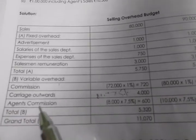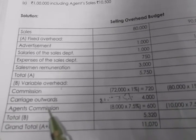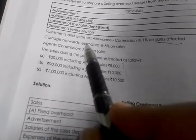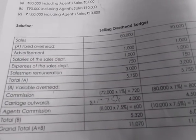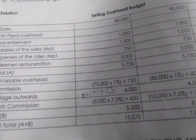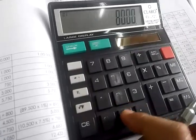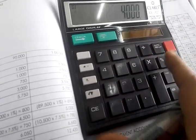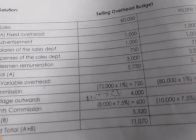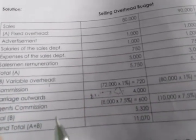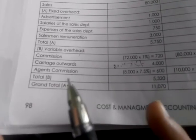Next is carriage outward. As per the given data, carriage outward is estimated at 5% on total sales. So: ₹80,000 × 5%, ₹90,000 × 5%, and ₹1,00,000 × 5%. We get ₹4,000 for the first column. Calculate all three amounts and record them.